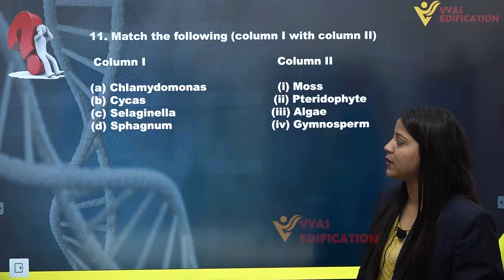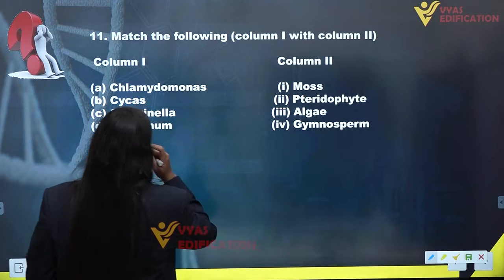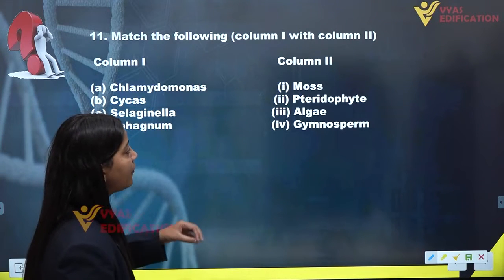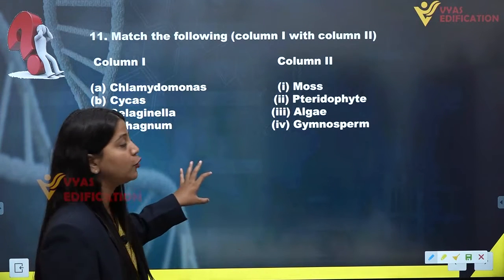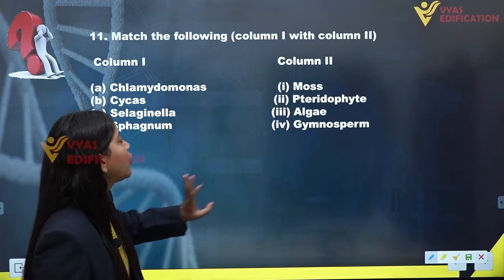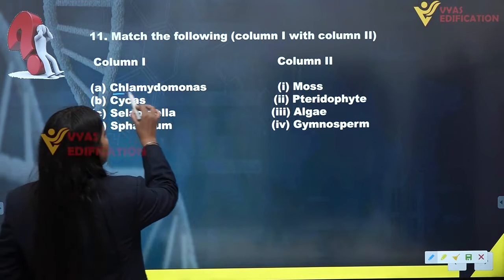In column 1 we have given the species, the plants, and in column 2 we have given the groups. Now we have to match column 1 with column 2. So this is A: Chlamydomonas.